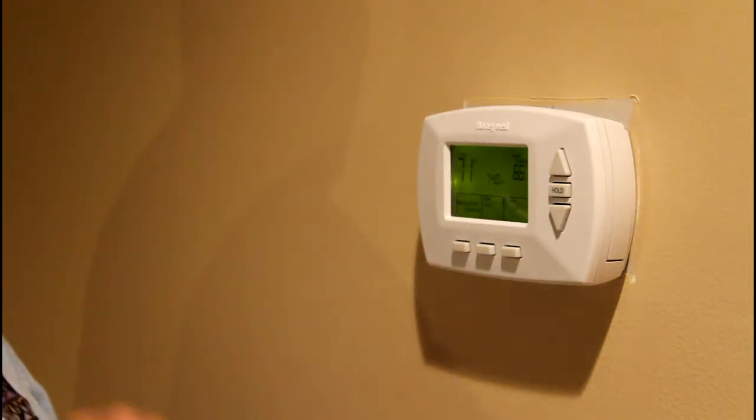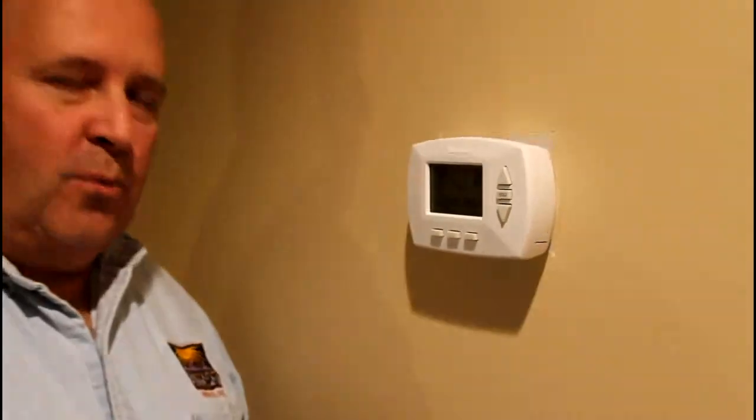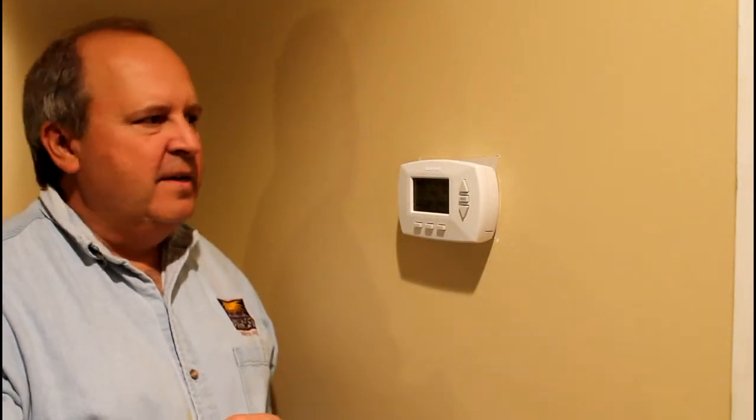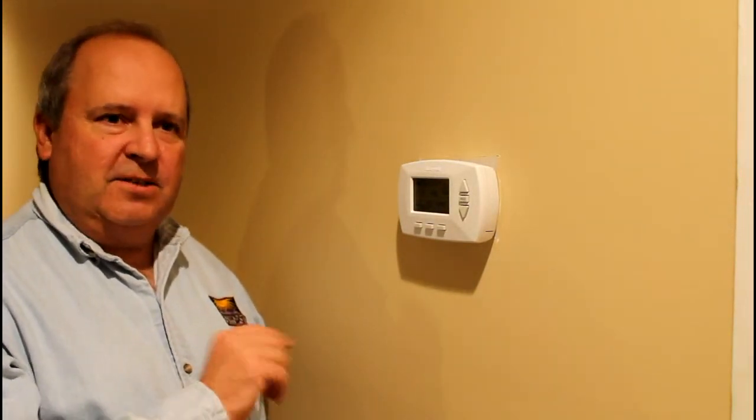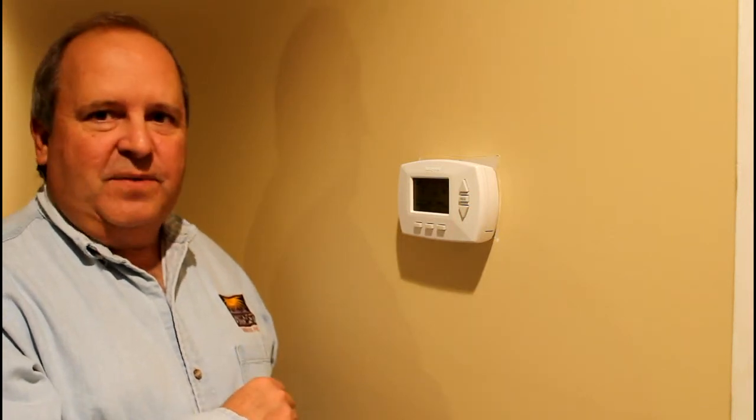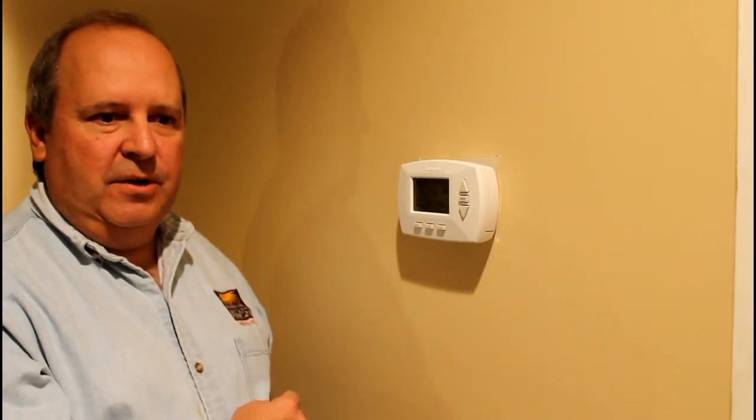So the bottom line is programmable thermostat. It's going to run you somewhere between 25 unless you get really fancy. Maybe you're spending 100 or more, but probably 25 to 50. If you've got a heat pump, make sure you do the heat pump settings. There's a few things I had to set in here to tell it that it was hooked up to a heat pump. You match up your wiring carefully, mount it to the wall, and it's actually a very simple process to do. And now you have automatic control over your heating and cooling unit that basically allows you to save money when you're not home, reducing your overall heating bill.